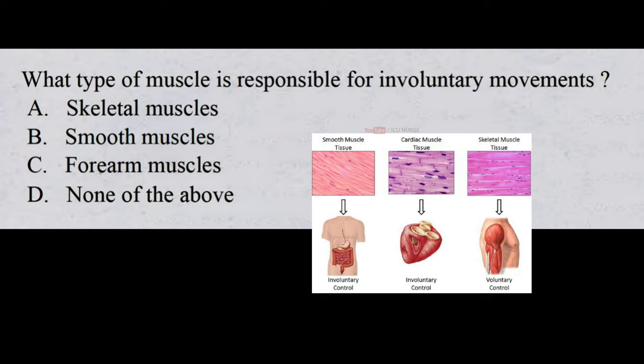What type of muscle is responsible for involuntary movements? A. Skeletal muscles. B. Smooth muscles. C. Forearm muscles. D. None of the above.